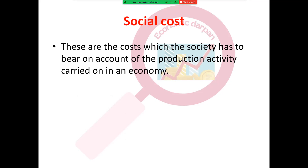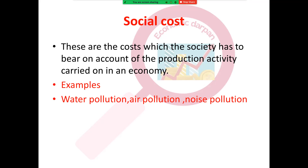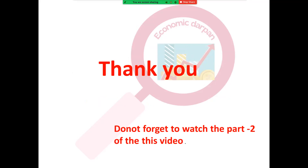Last is social cost. It is not always the case that only the producer bears the cost of production — sometimes society also has to bear costs. Social costs are the costs which society has to bear on account of production activity carried on in an economy. For example, if there are factories in residential areas, society bears costs in terms of health and physical wellbeing. Water pollution, air pollution, and noise pollution coming from factories are detrimental to society. All such costs borne by society are called social costs.